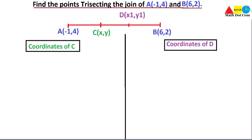Today's topic is finding the points trisecting the join of two points on a line. We are given two endpoints A and B, and we have to find the two points that are actually trisecting the join of these two points. Trisecting means we have to find the two points that divide the line into three parts.